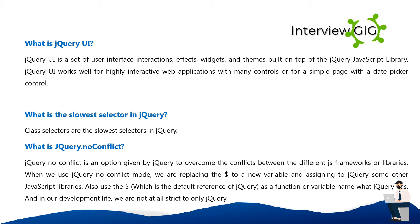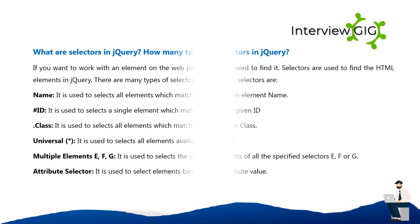What is jQuery.noConflict()? jQuery.noConflict() is an option provided by jQuery to overcome conflicts between different JS frameworks or libraries. When using noConflict mode, the dollar sign ($) is replaced with a new variable assigned to jQuery, since other JavaScript libraries also use $ as a default reference or function name.